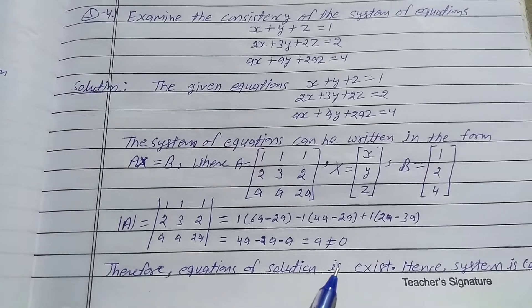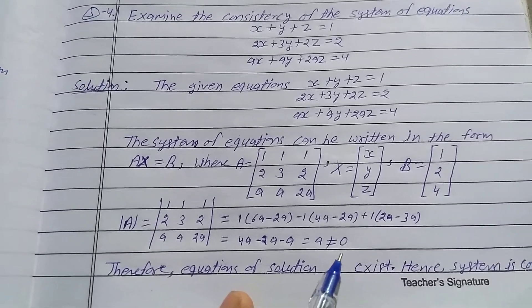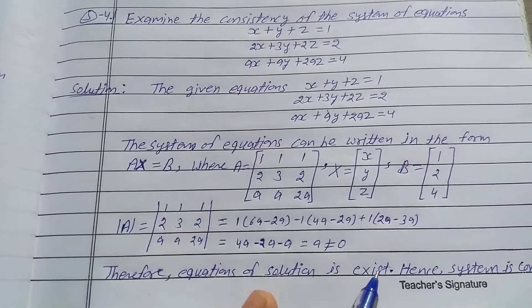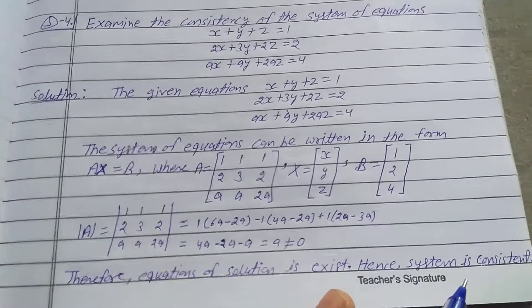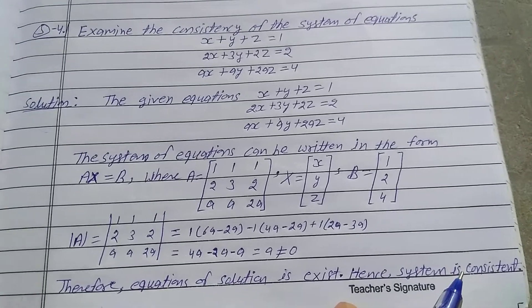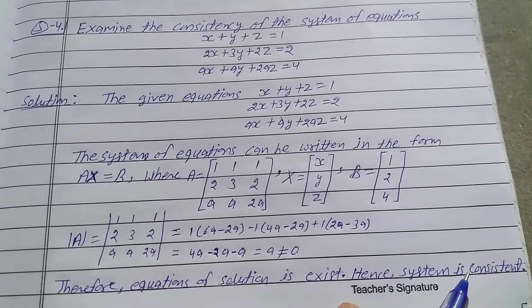Therefore, the solution of equations exists. If determinant value is not 0, then solution of equations exists. Hence, the system is consistent. If solution exists, then system is consistent.